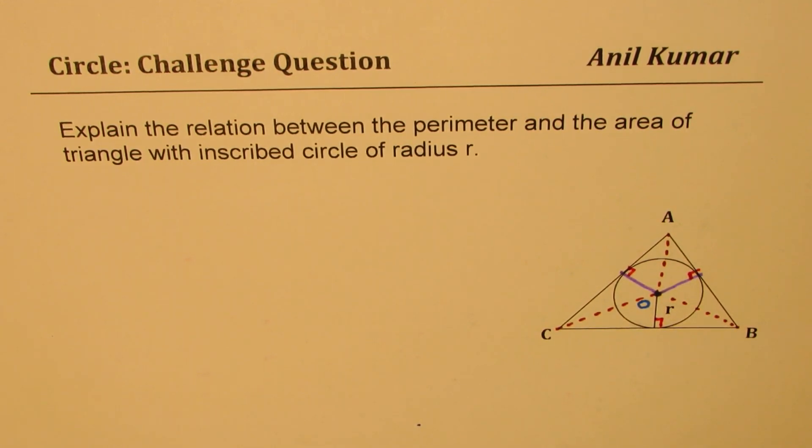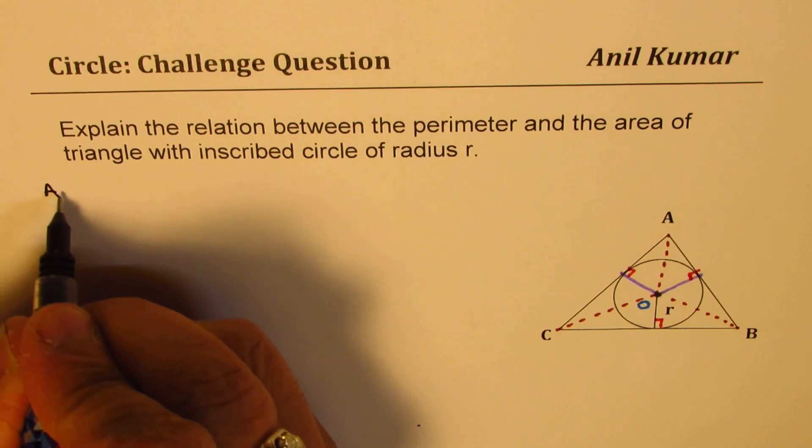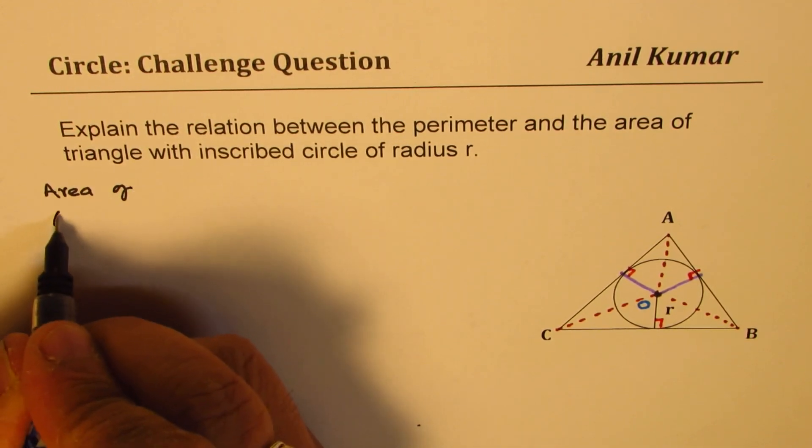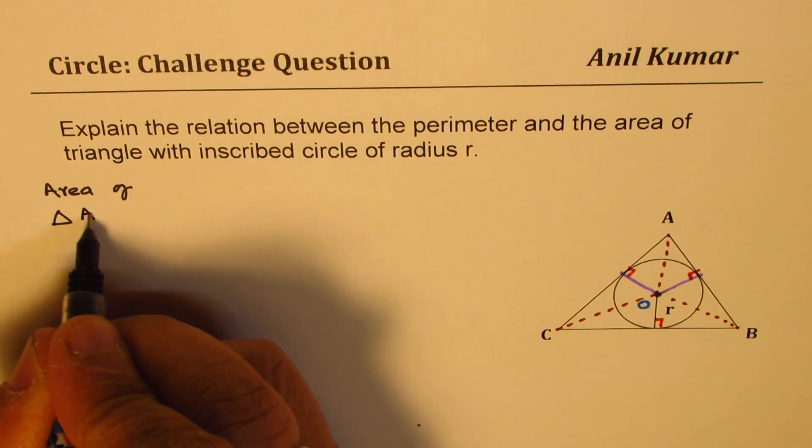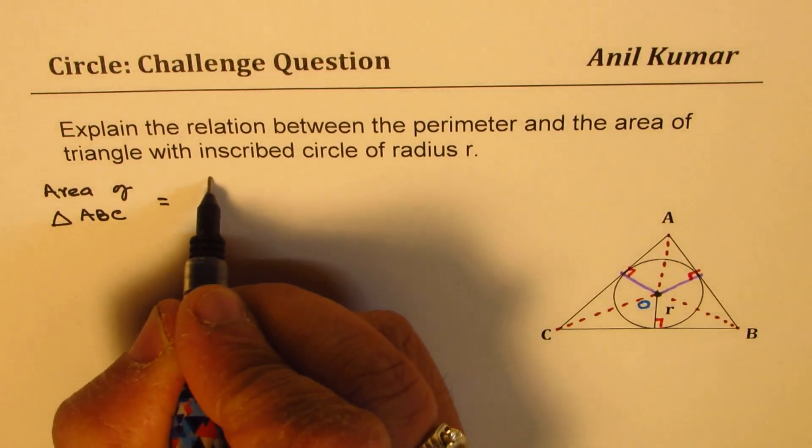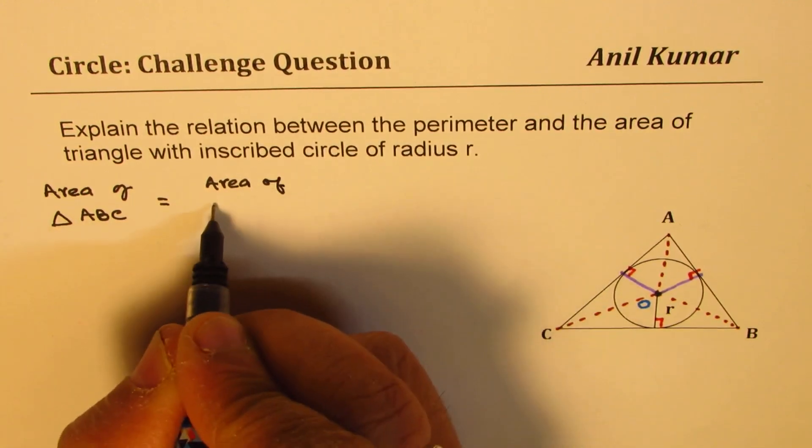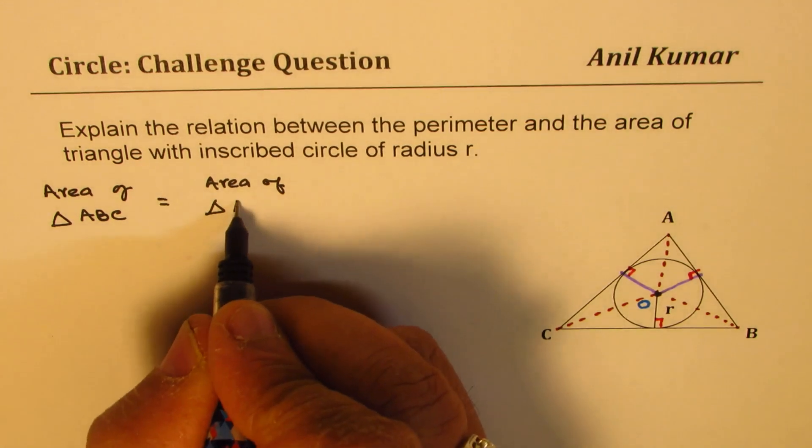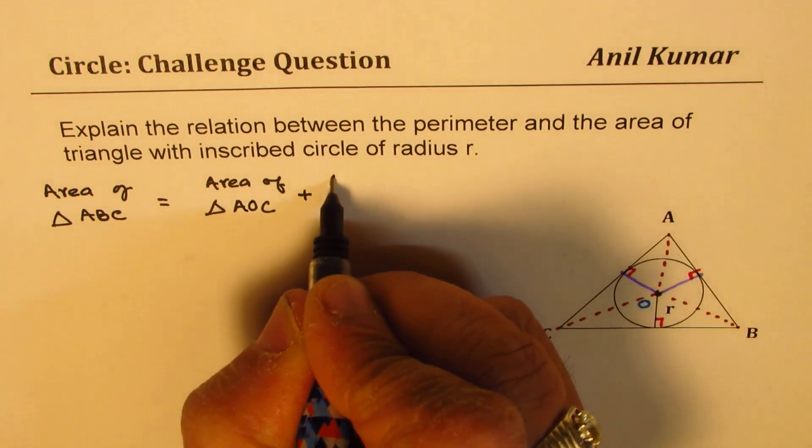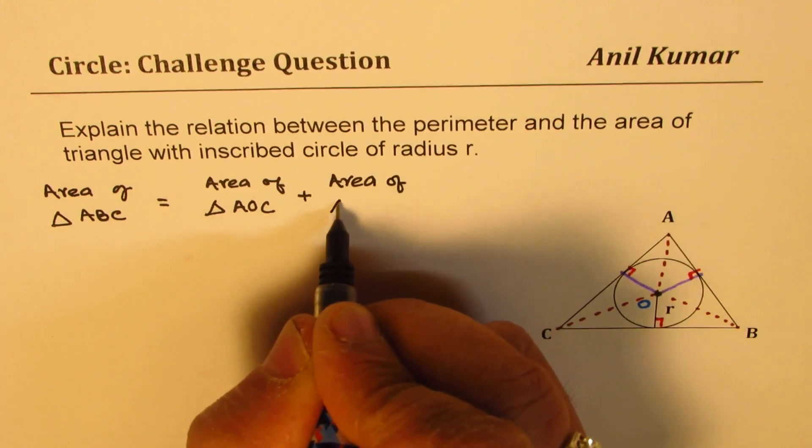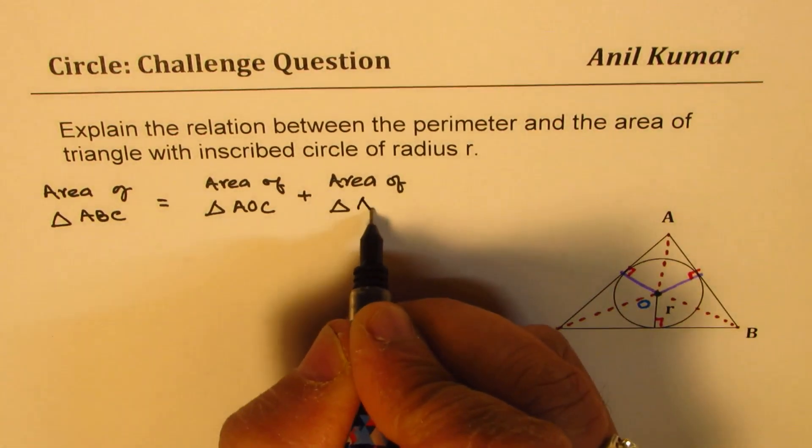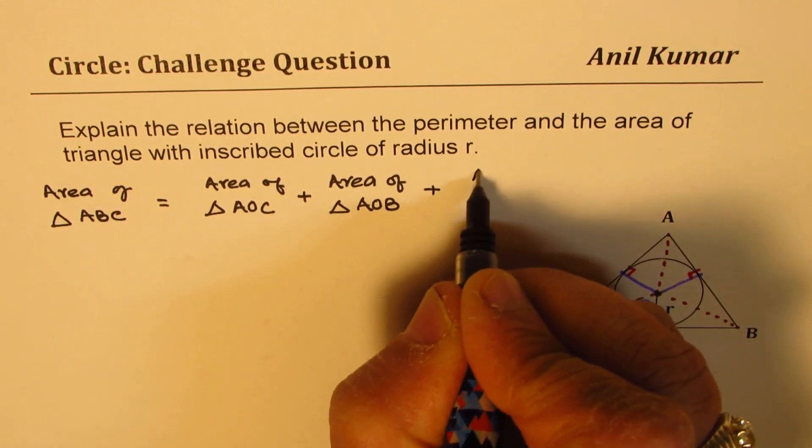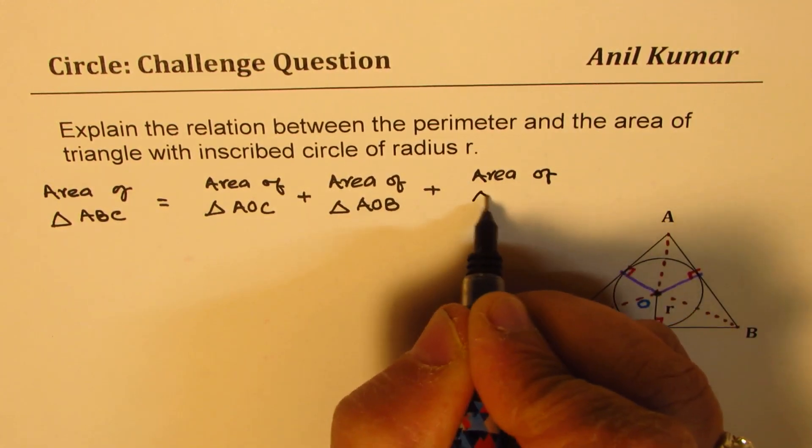Now since we need to relate area with the perimeter, what we can do here is that we can find the area of the whole triangle as sum of area of three triangles. So we can say area of triangle ABC is equal to area of triangle AOC, plus area of triangle AOB, plus area of triangle COB.